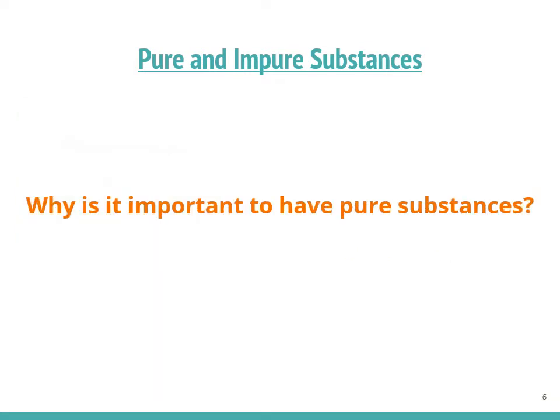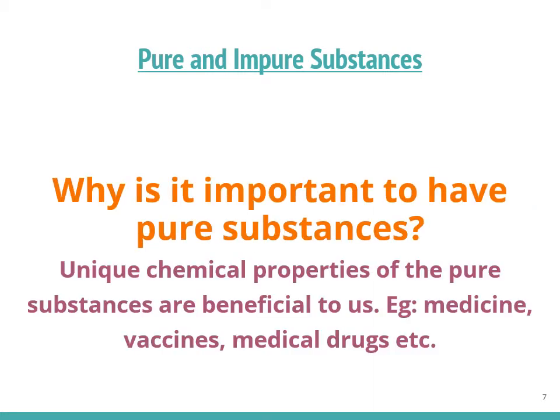We have learned how to differentiate pure and impure substances. Now the question is: why is it important to have pure substances? We need the unique chemical properties of pure substances for many important uses — for instance, medicine, vaccines, medical drugs, etc.